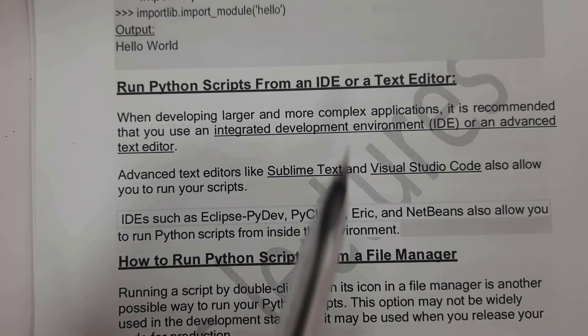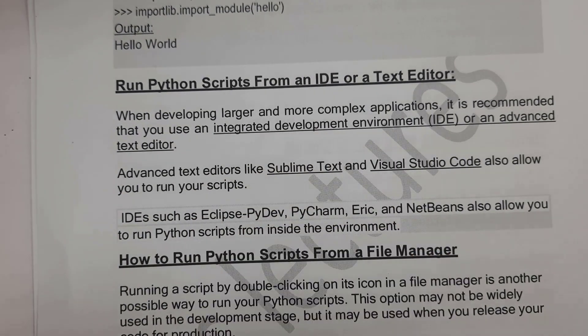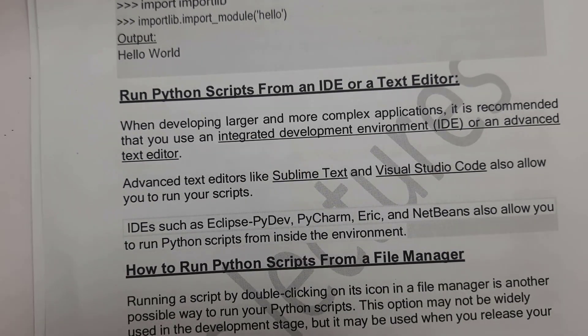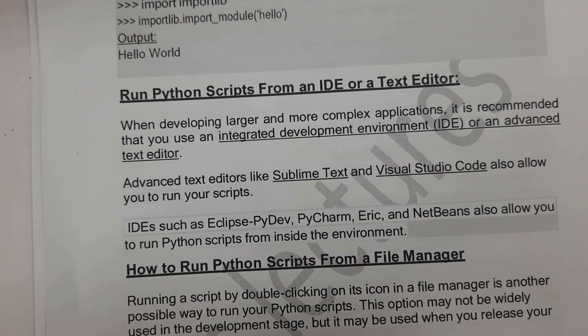The third way to run a Python program is by using an IDE or text editor. There are many advanced text editors available to run Python scripts. Some examples are Sublime Text editor and Visual Studio Code. These are two famous text editors for running Python scripts.